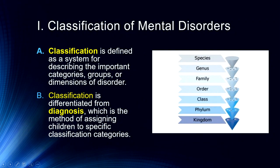What I'd like to do is introduce this idea of classification — basically a system for describing categories, groups, or dimensions of a disorder. You're all familiar with classification systems; at some point you learned this classification system for plants and animals: kingdom, phylum, class, order, family, genus, species. This is how we try to classify whether something is an animal, vegetable, or mineral, so to speak.